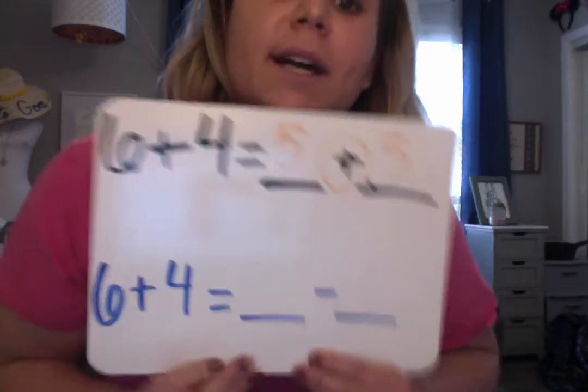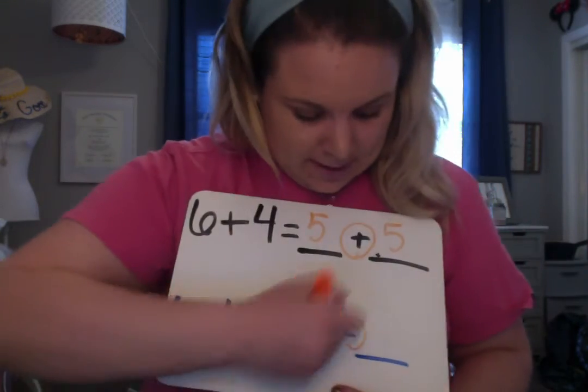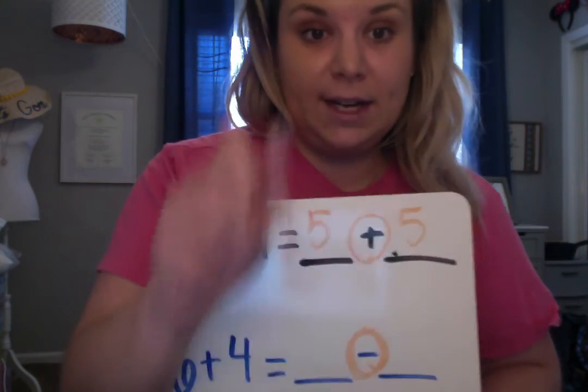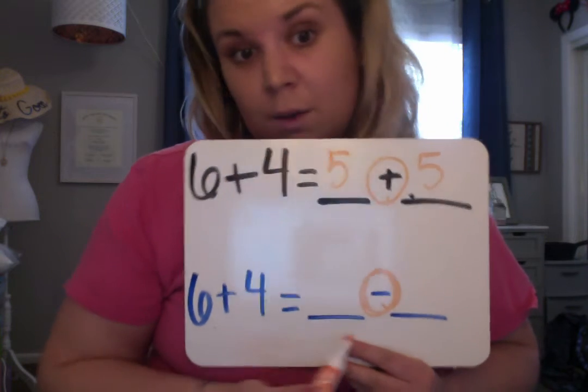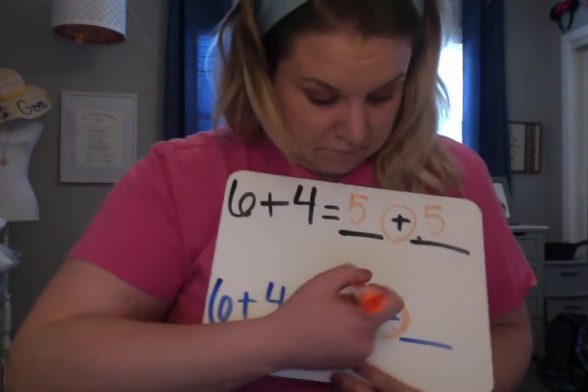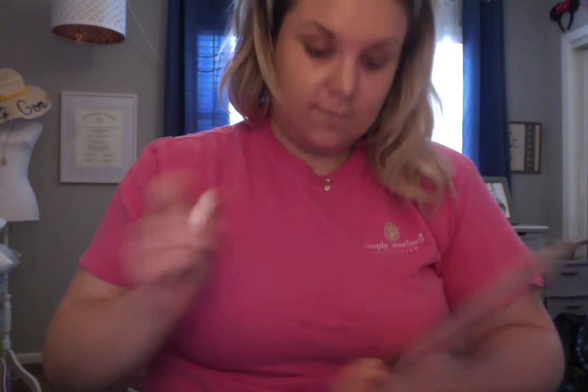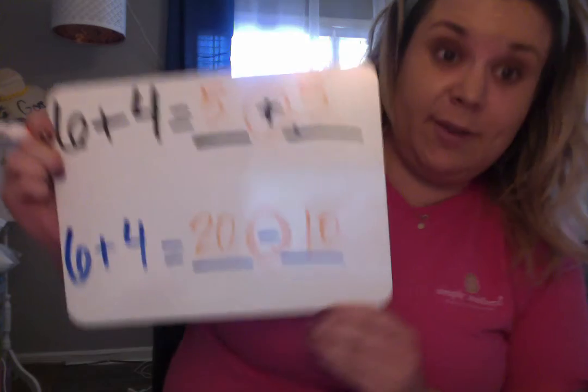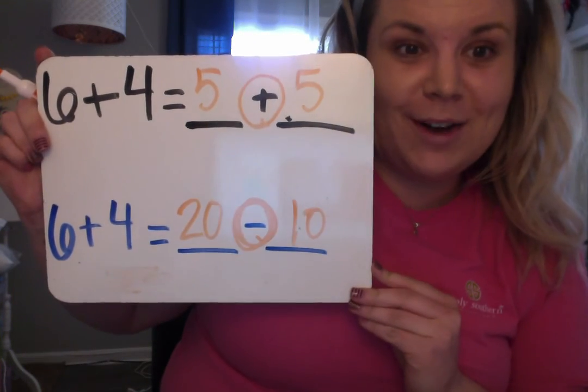Now, down here, we have six plus four equals blank minus blank. So do not add, be very careful with those, my friends. Six plus four still makes 10. What's a fact you know that gives you the difference of 10? 20 minus 10 equals 10, 11 minus 1 equals 10, 12 minus 2 equals 10, and so on and so on.